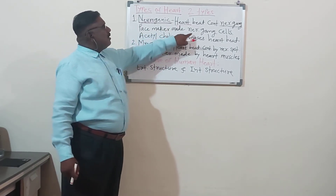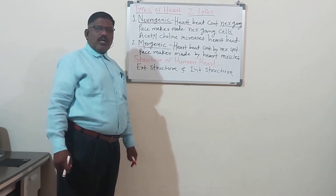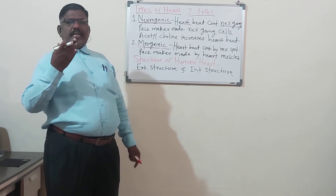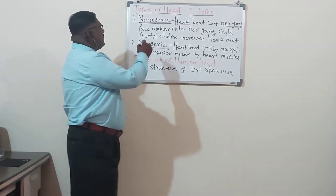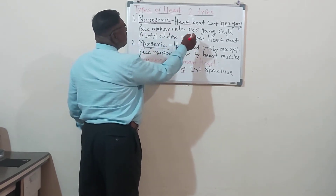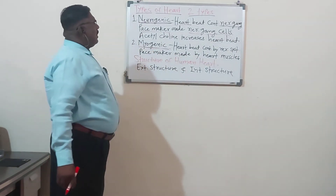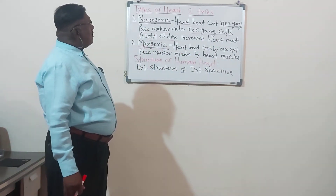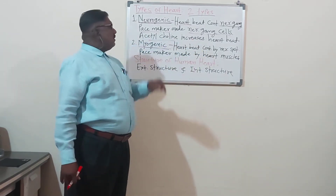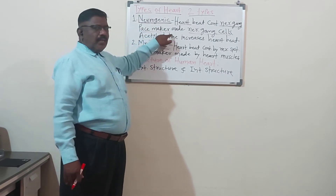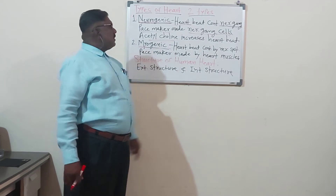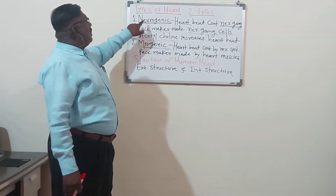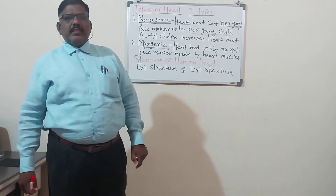In the neurogenic heart, the pacemaker is made up of nerve ganglion cells. The pacemaker is an important part of the heart from where the heartbeat starts — the contraction and relaxation movement. In the neurogenic heart, acetylcholine increases the heartbeat. So to summarize: neurogenic heart — heartbeat is controlled by the nerve ganglia, pacemaker is made up of nerve ganglion cells.